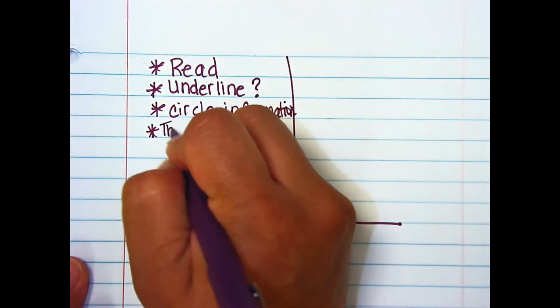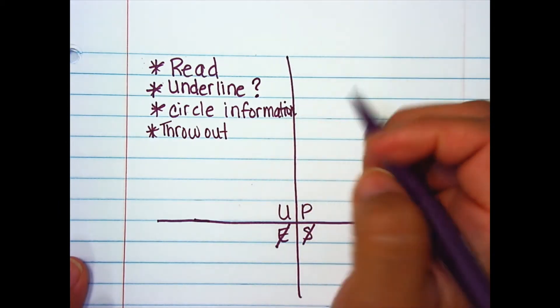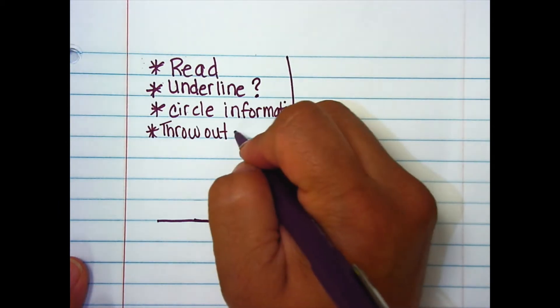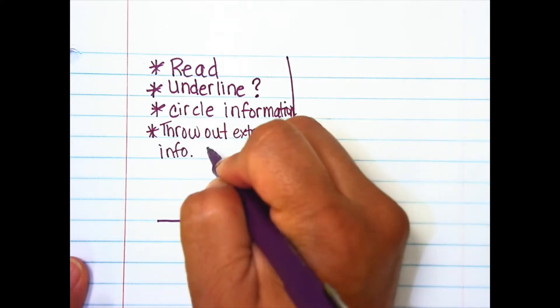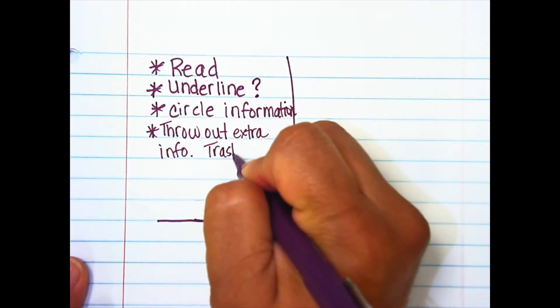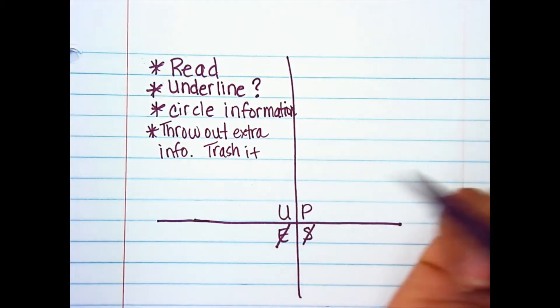After we circle the information that we have, we're going to throw out or cross out extra information. So we're going to throw out extra info. In other words, we're going to trash it. That's our understand.